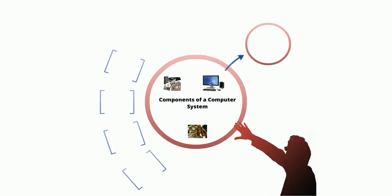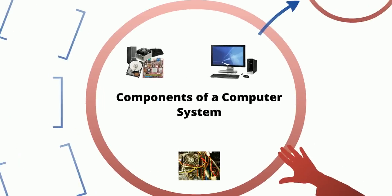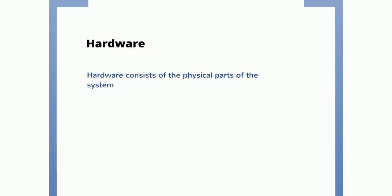Hello, welcome to this podcast on the components of a computer system for the OCR Computing A-level specification unit F451. The components of the computer system includes hardware. Hardware consists of the physical parts of the system, so that's everything that you can pick up, you can touch, you can throw, you can damage, for instance.